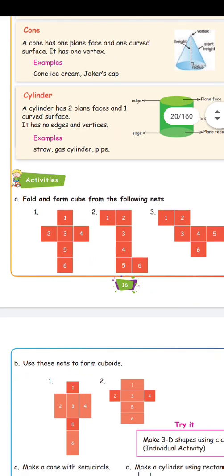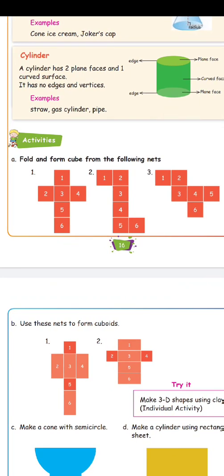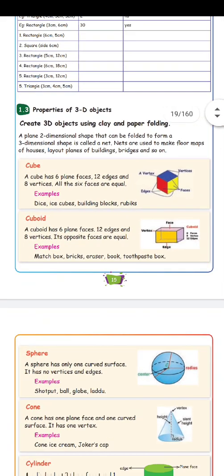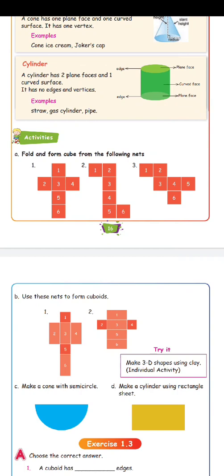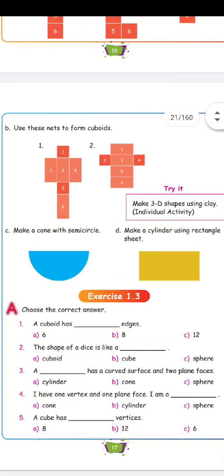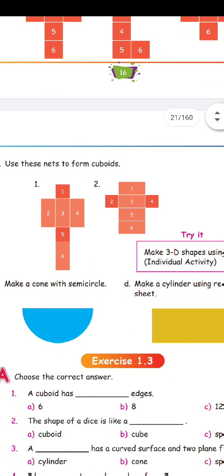Fold and form a cube from the following nets. We need to fold and form a cube by cutting paper shapes. We form a 2D shape into a 3D cube by cutting and folding a paper net.